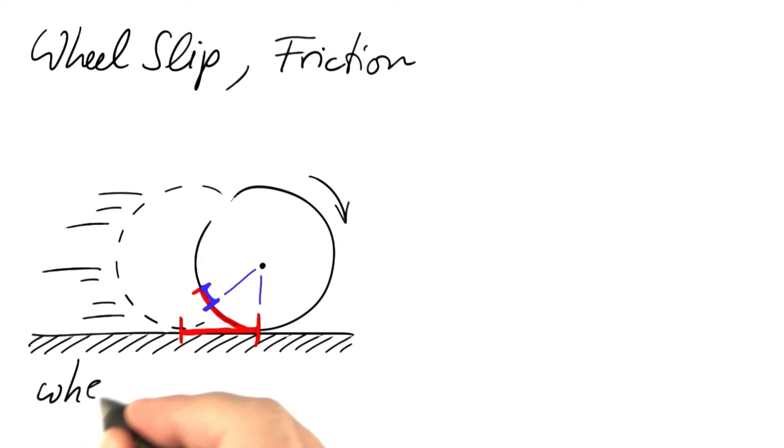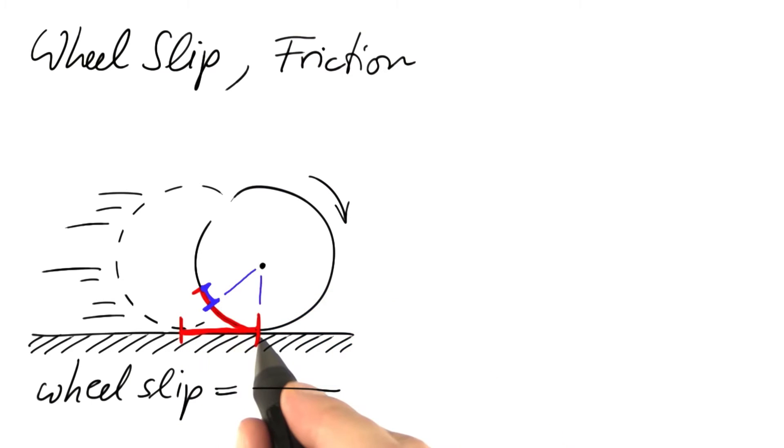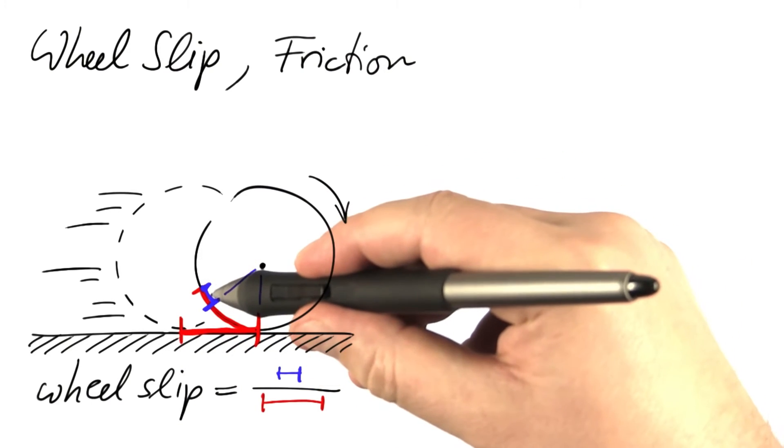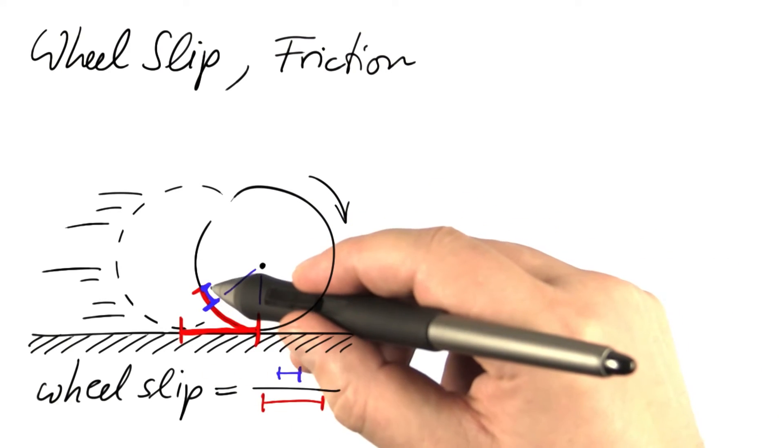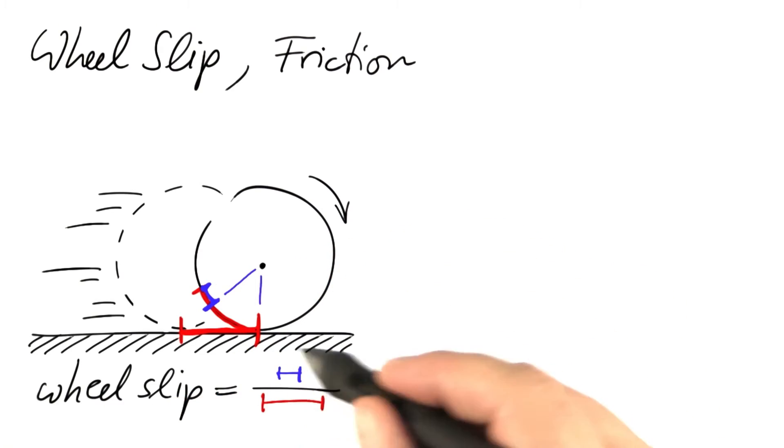This leads to the definition of wheel slip. Wheel slip is the ratio of that missing distance to the distance traveled by the car. If we have perfect rolling, there won't be any difference. The wheel slip becomes zero. If we don't move at all, the blue distance equals the red distance and the wheel slip becomes one.